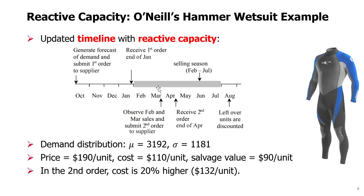At the end of March, we can submit an order and receive it at the end of April, one month later. This is the reactive capacity we have — a second order opportunity. In the second part of the season, we potentially order an additional quantity. We might order zero, or we might order some positive quantity.